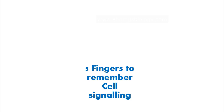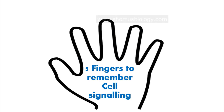The five finger concept of remembering cell signaling pathways is simply about thinking about five fingers. You take your left hand, and the palm is where all the writing is. You have five fingers, and these five fingers represent five important parameters of cell signaling. Whenever you're reading a cell signaling pathway, these five parameters are the most important things for every single pathway.